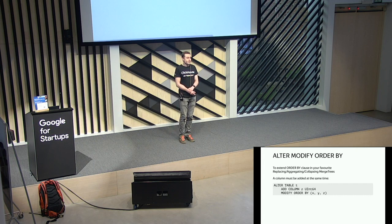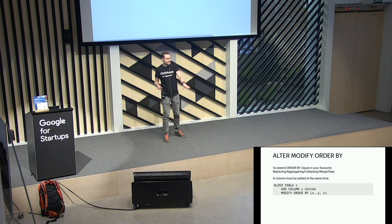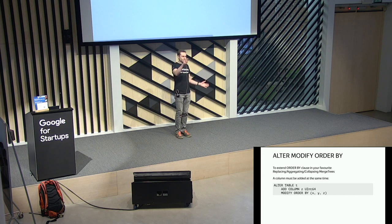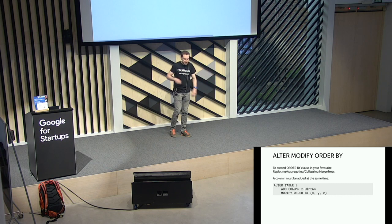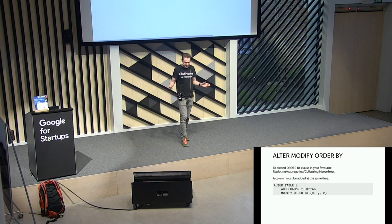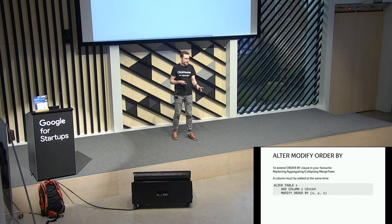ALTER MODIFY ORDER BY: if you have MergeTree tables with special engines like ReplacingMergeTree, CollapsingMergeTree, or AggregatingMergeTree, you specify a primary key or ORDER BY expression for background aggregation. Sometimes you need to add more columns to it, which was almost impossible before. Now you just execute ALTER TABLE MODIFY ORDER BY. The only trick is that you must add your column and modify the ORDER BY in the same query.